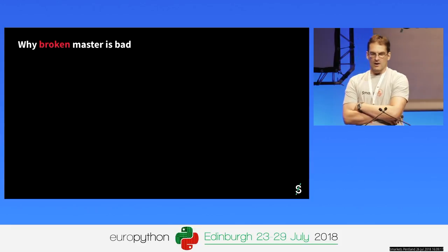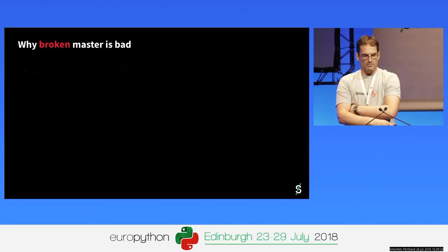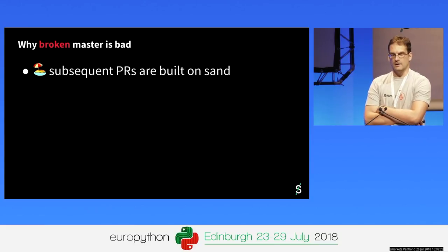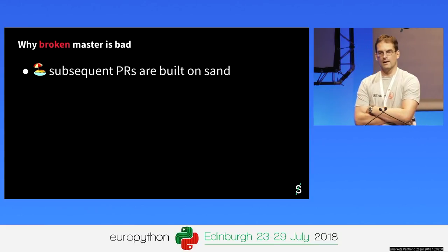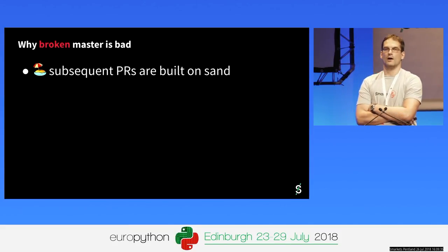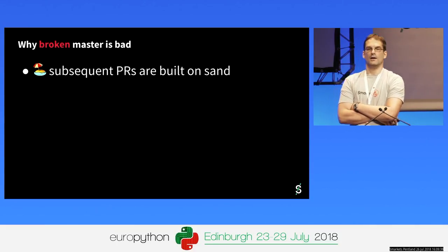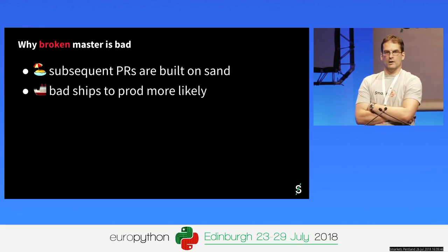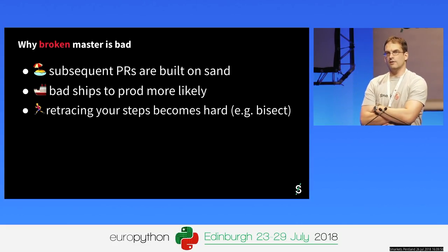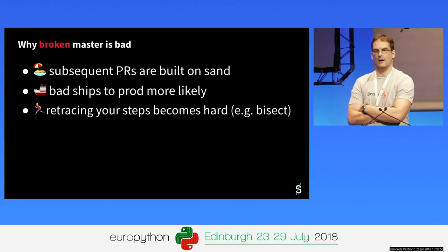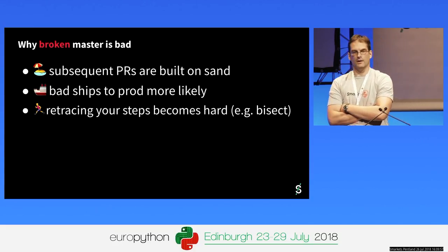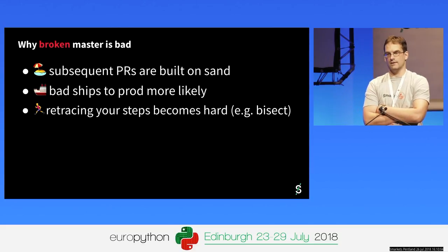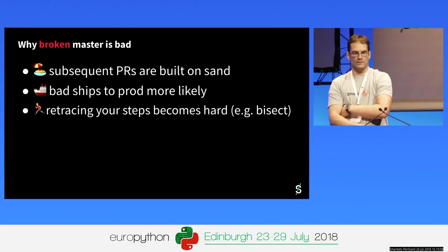At the risk of stating the obvious, let's briefly see why broken master is bad. The foremost problem, which was quite painful when I started at Smarkets, is that when you can't rely on master working correctly and you start new feature work on a branch, it can be a very high overhead to figure out what actually is your fault versus what was the fault you started from with a broken master. Obviously it also makes it more likely to ship broken stuff to production, which is very undesirable. A more subtle point is it also makes it much harder to retrace your steps — for example if you want to bisect some undesirable behavior, bisect is going to break badly if you don't know which commits have random unrelated failures.